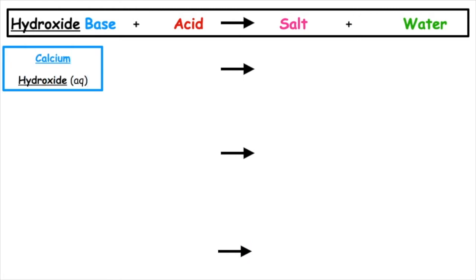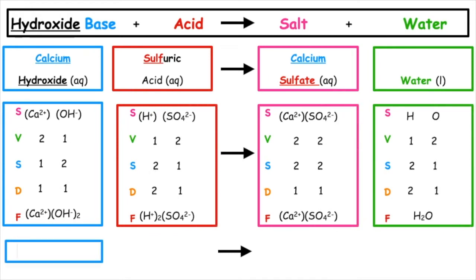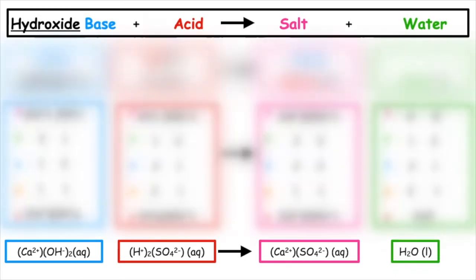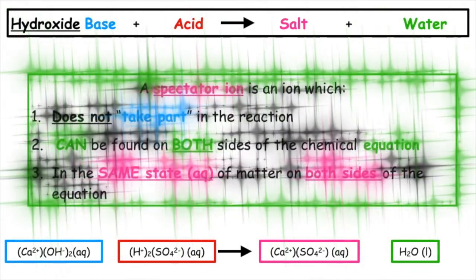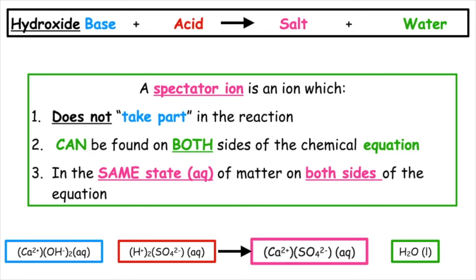In this example, we have calcium hydroxide reacting with sulfuric acid to produce calcium sulfate plus water. We're going to change this into the ionic equation, and to identify the spectator ion, we are going to read the equation backwards. Water is in the liquid state, so therefore we have no ions present. If we look at the salt, calcium sulfate, we can see it's in aqueous solution. Remember, the word solution ends in ions. Calcium is our Ca²⁺. We can see that on the product side, and we can also see on the reactant side we have a Ca²⁺. Calcium is an example of a spectator ion.